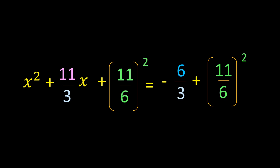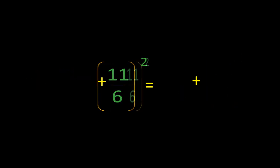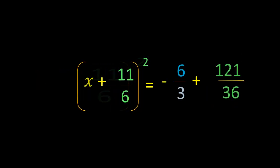Here, the b² part of the equation is (11/6)². Now, x² + (11/3)x + (11/6)² is a perfect square trinomial, and we are going to express this as (x + 11/6)².